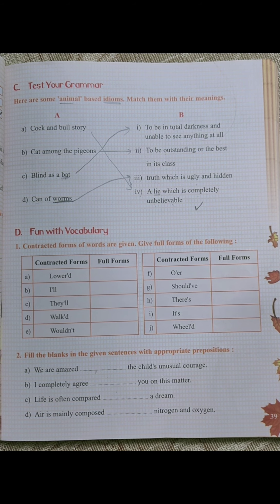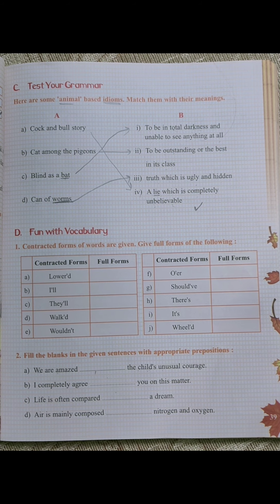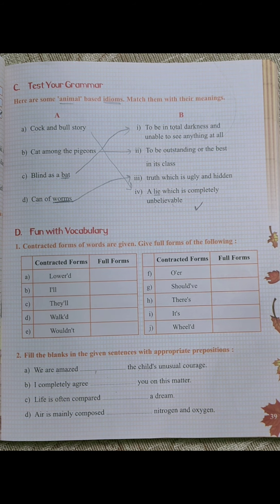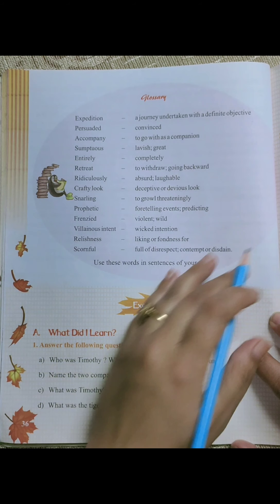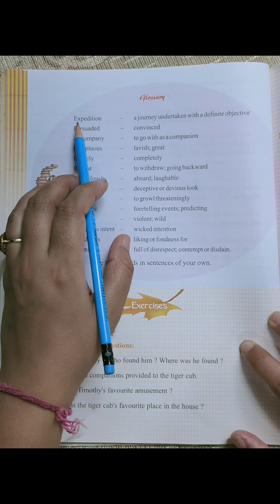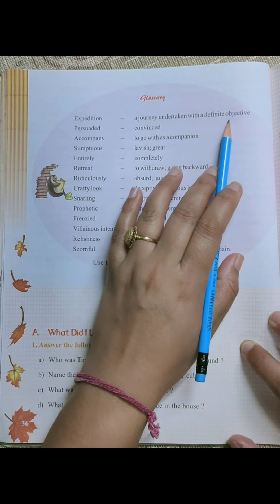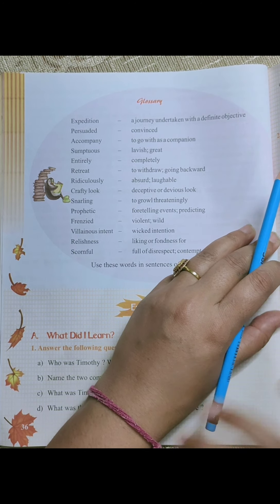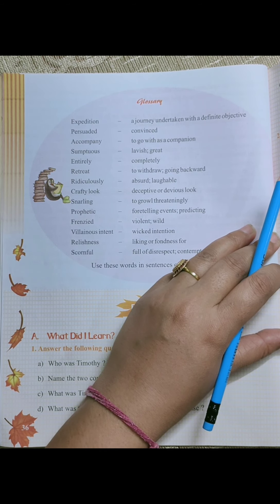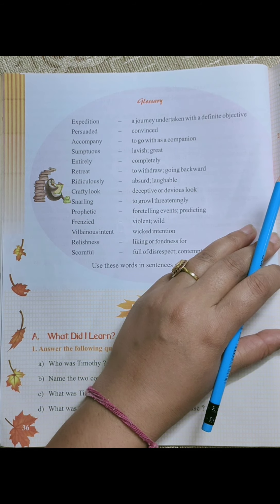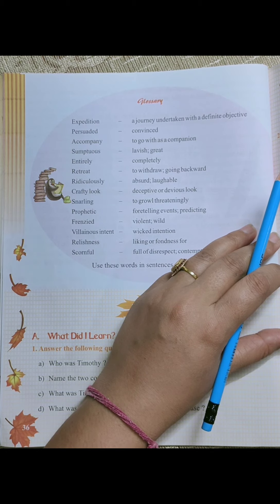Good morning children. Yesterday we have done word meanings and back exercise of chapter number four. So first of all we will revise word meanings. Open your book on page number 36. First word is expedition. Expedition means a journey undertaken with a definite object — koji journey jokisi objective ko, aim ko leke ki jayi, usko bolte expedition. Jaise is chapter mein grandfather gaye thay forest mein hunting ke liye, that is called expedition.